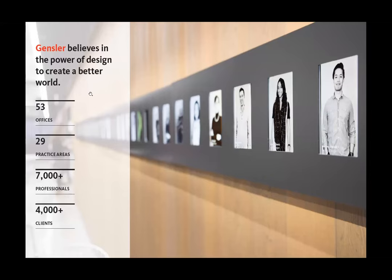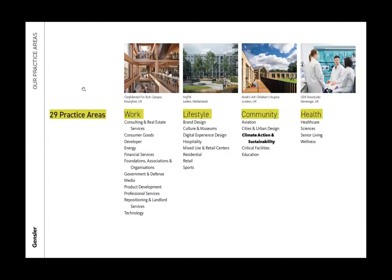Gensler is quite a large design firm. We have 53 offices globally, over 7,000 employees, and over 4,000 clients. We do a little bit of everything from urban planning to brand design and innovation consulting. We organize ourselves into 29 different practice areas across project types, and each practice area has a dedicated sustainability champion. We also have sustainability champions at the regional office and studio levels, trying to integrate sustainability as much as possible throughout our firm.